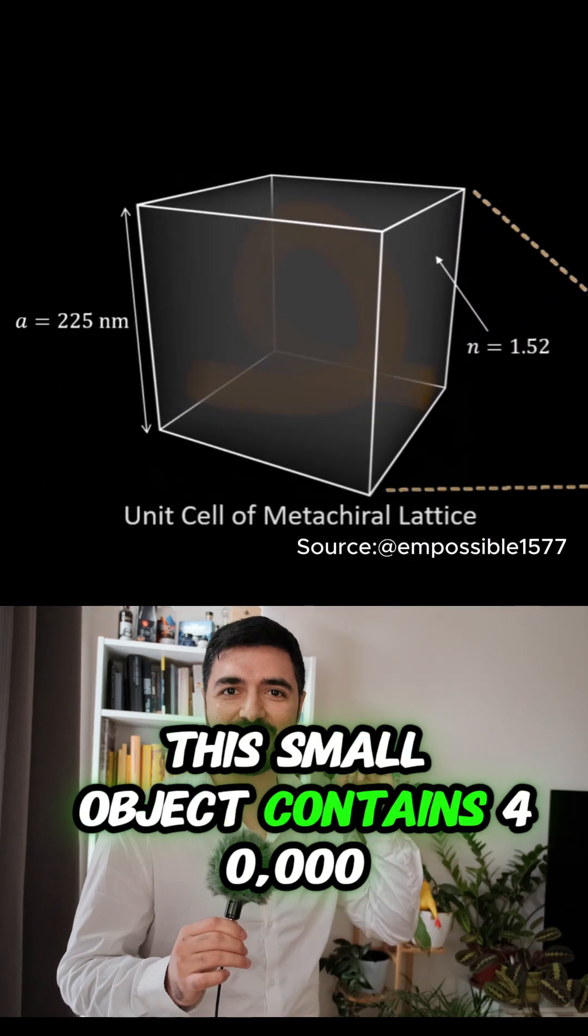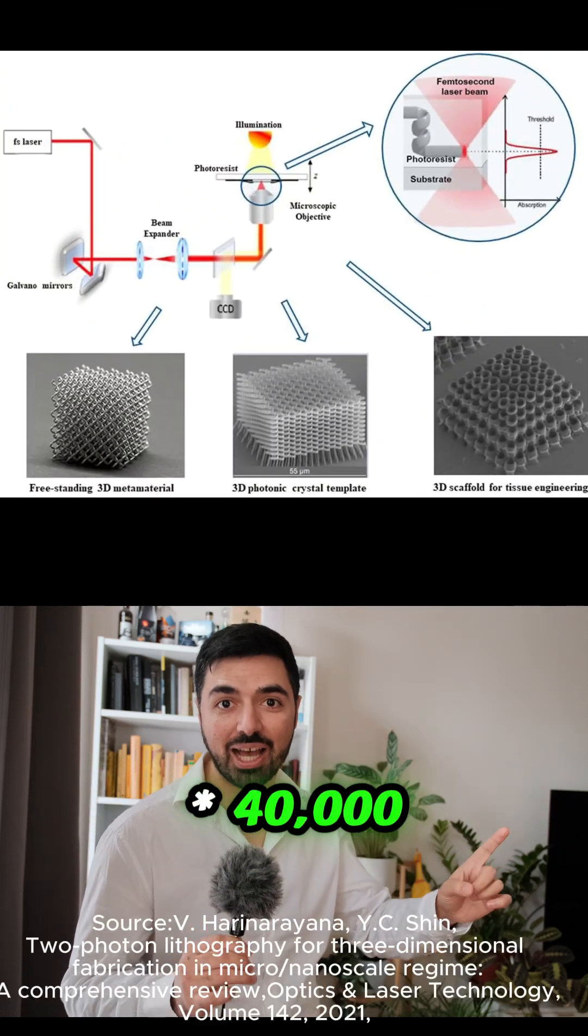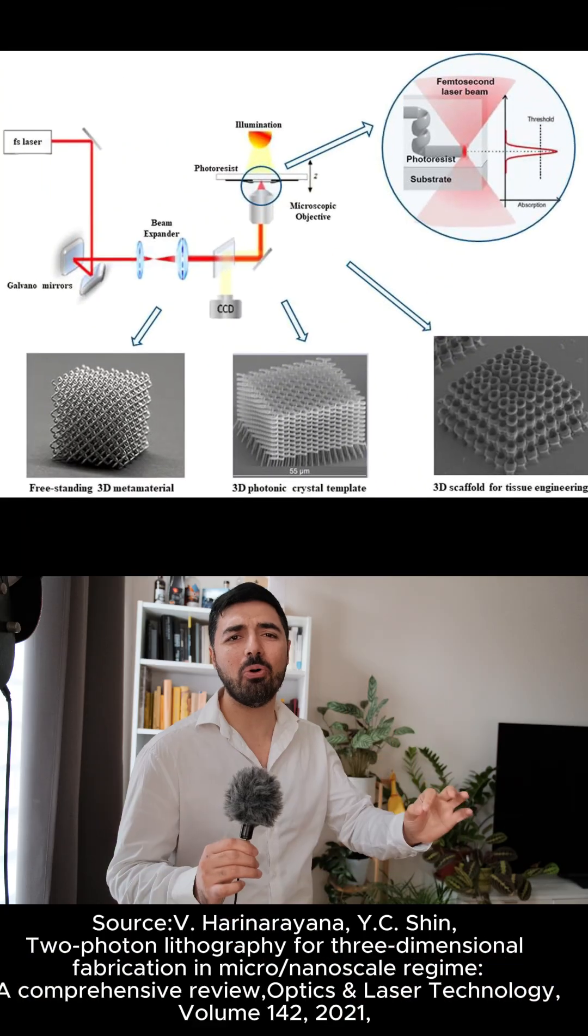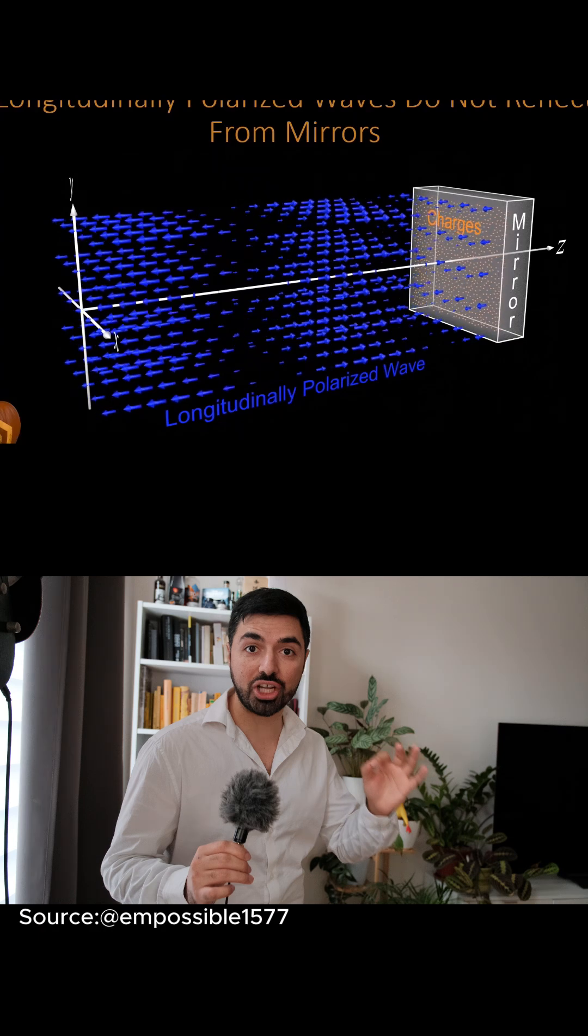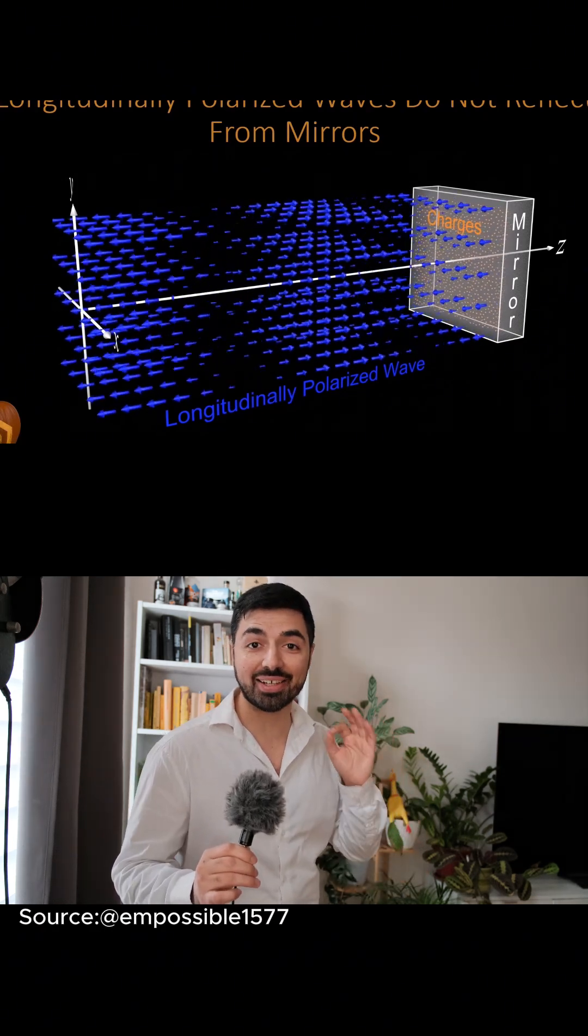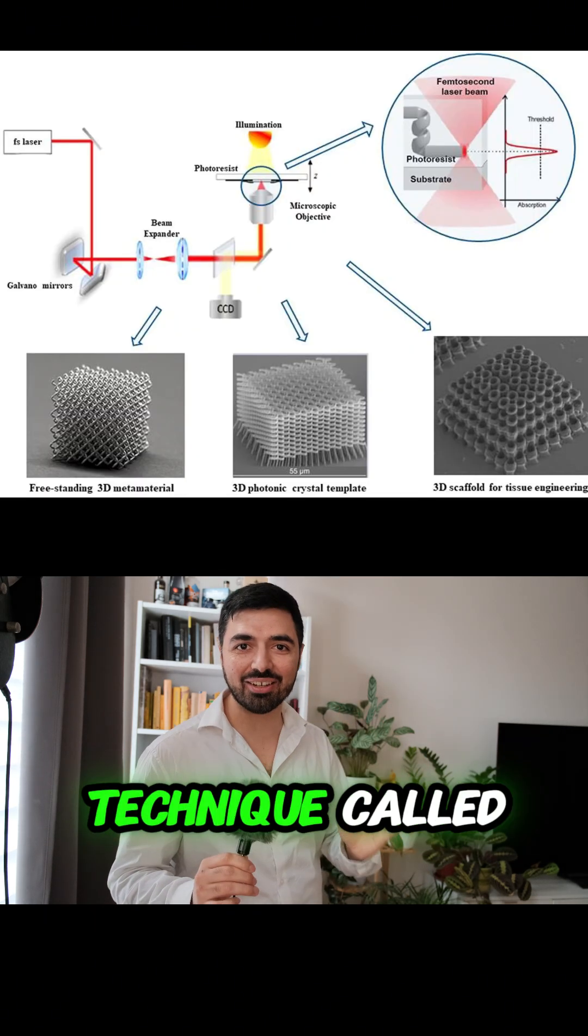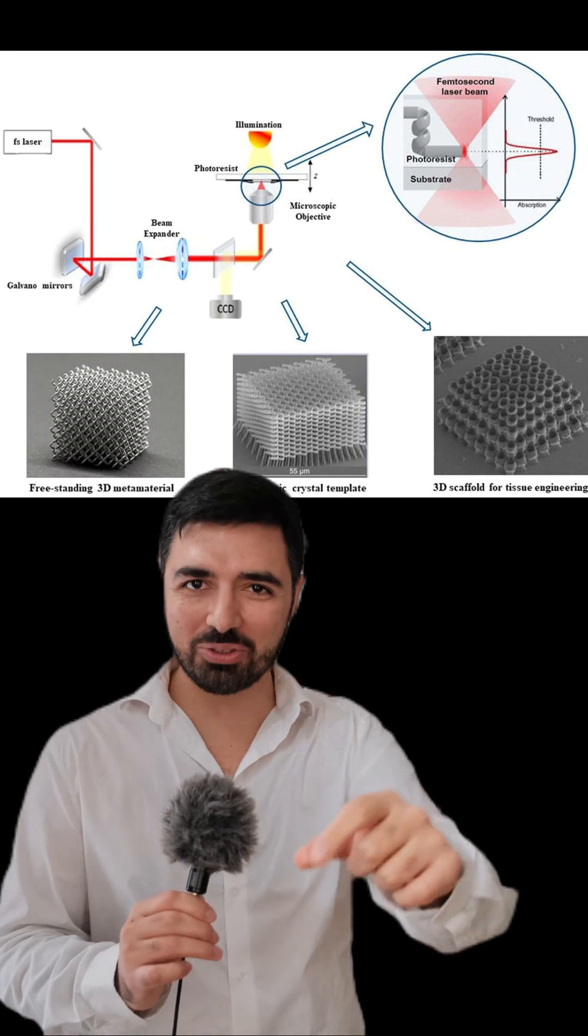These small objects contain 40,000 times 40,000 times 40,000 small unit cells designed to change the direction of the wave's electric field, and it's made using a technique called multi-photon lithography.